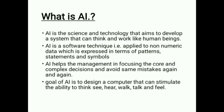AI helps the management in focusing on core complex decisions and avoids the same mistakes again and again. Humans ki alag-alag characteristics hoti hain aur woh ek mistake ko again and again repeat kar sakte hain. But jo software hum banate hain woh mistakes repeat nahi karta, kyunki hum us mein us tarike ka data feed karte hain ki woh complex decisions lene mein management ko help kare aur mistakes dubara repeat na kare. So the goal of AI is basically to design a computer that can simulate the ability to think, see, hear, walk, talk and feel.